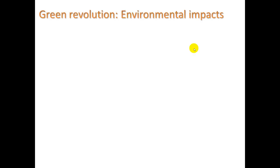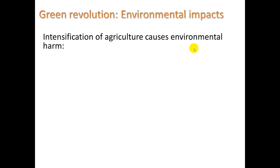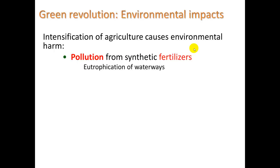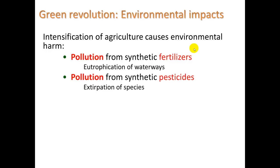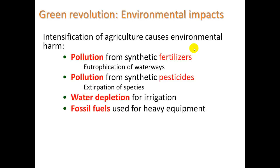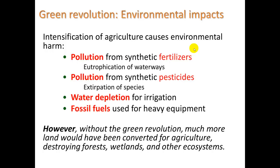There have been environmental impacts from this, because the intensification of agriculture causes environmental harm. There's been pollution from synthetic fertilizers — we see this in eutrophication of waterways. There's been pollution from synthetic pesticides, leading to extirpation of species — insects going extinct or at least extirpated in a region. We see water depletion from increased irrigation, and fossil fuels being used at a heavier rate for heavy industrial equipment. However, without the Green Revolution, much more land would have been converted for agriculture, destroying forests, wetlands, and other ecosystems.